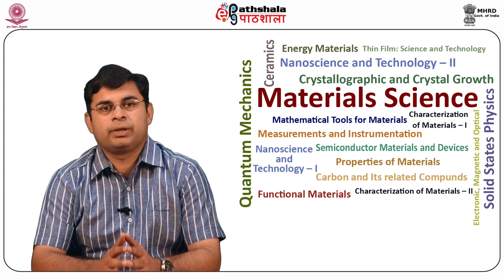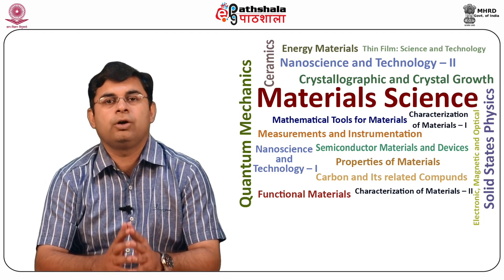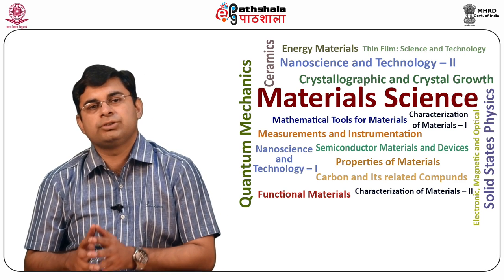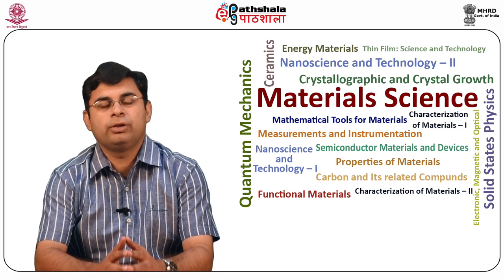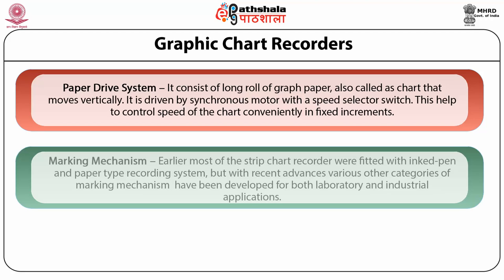In strip chart recorders, one or more variables are recorded with respect to time, so they are also called XT recorders. The first component is the paper drive system, which consists of a long roll of graph paper — also called a chart — that moves vertically. It is driven by a synchronous motor with a speed selector switch, which helps control the speed of the chart conveniently in fixed increments.